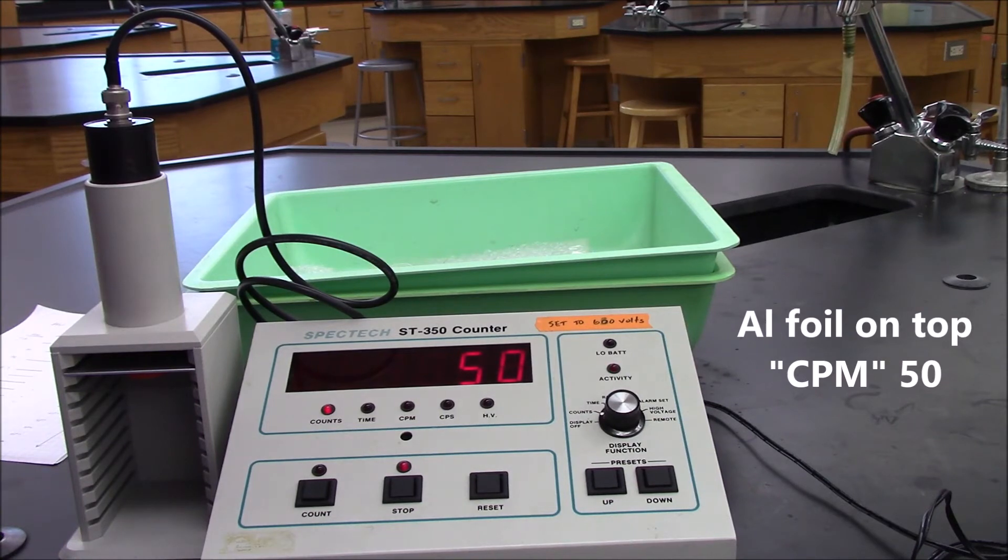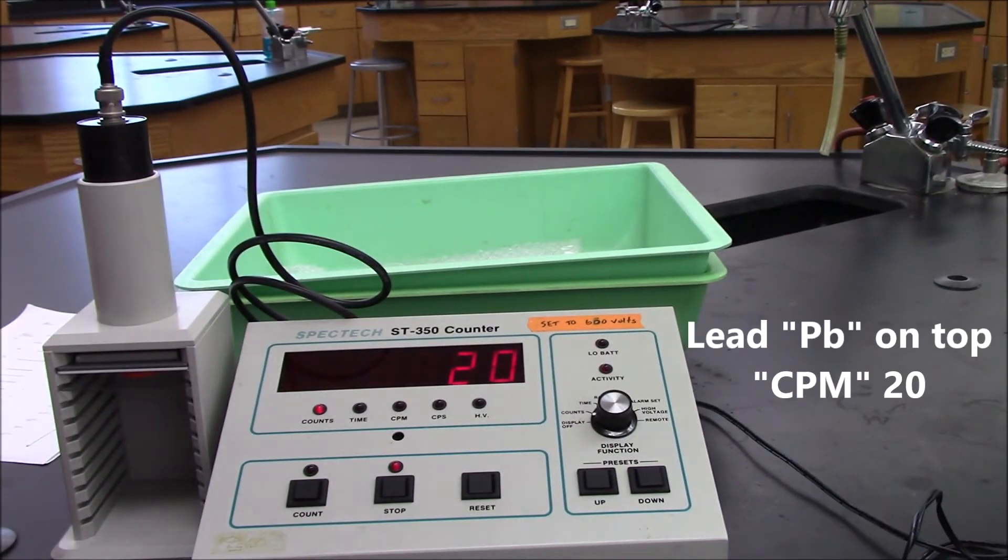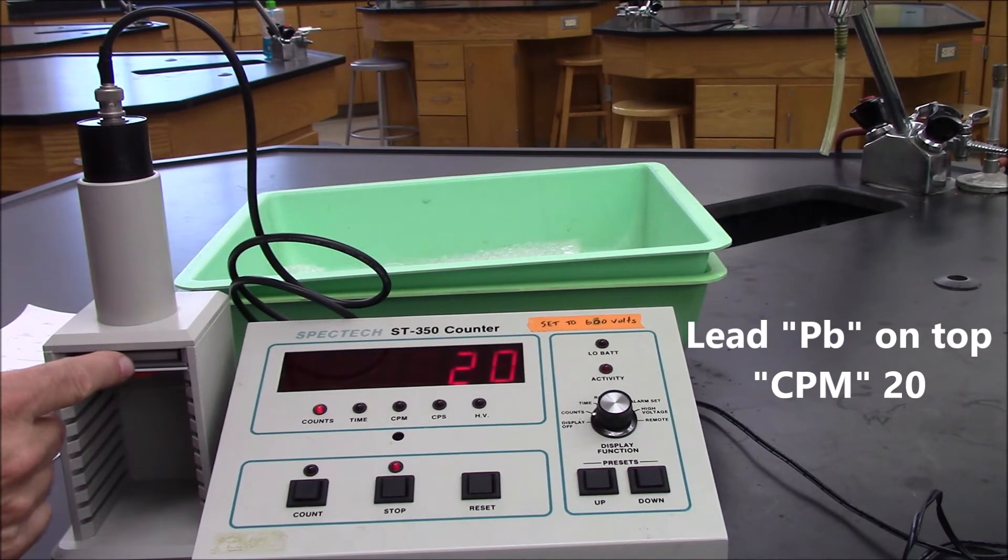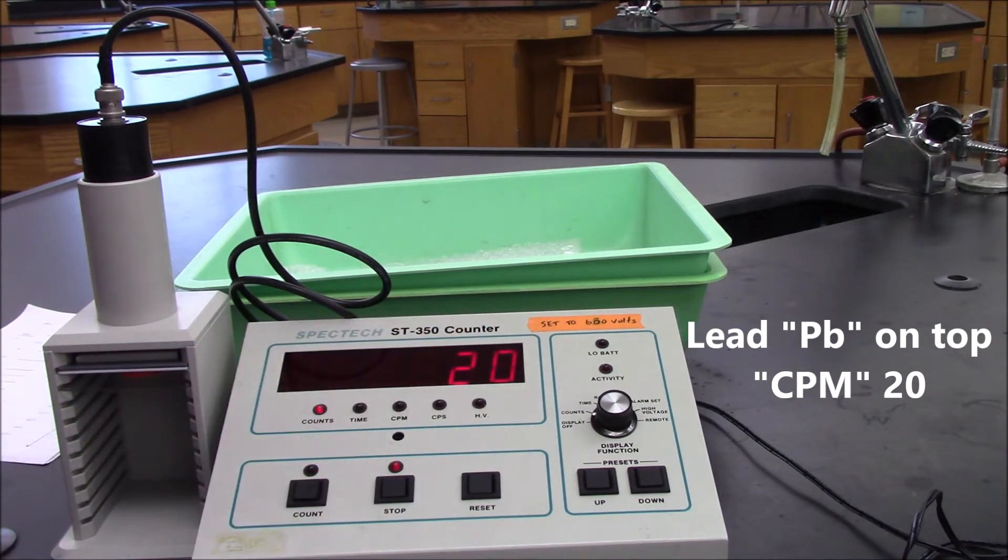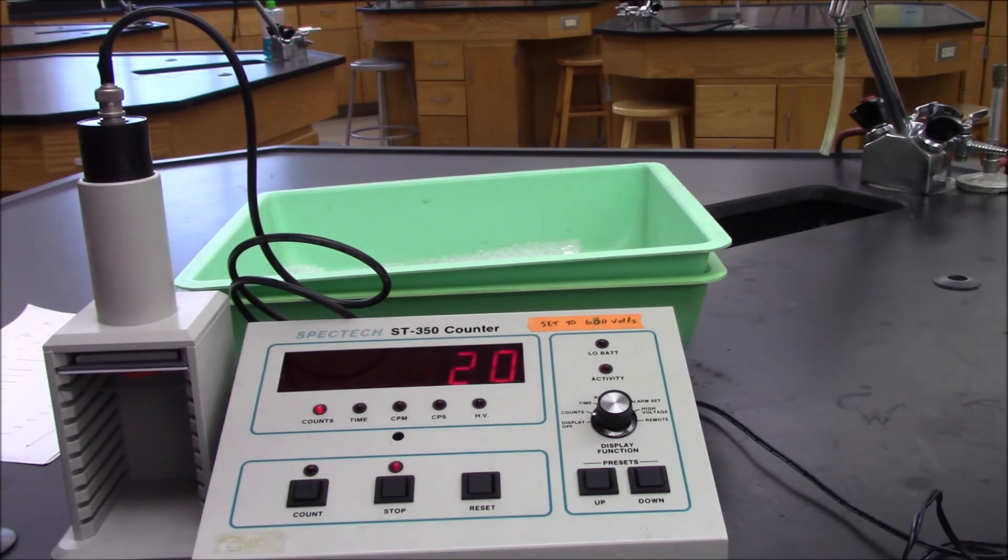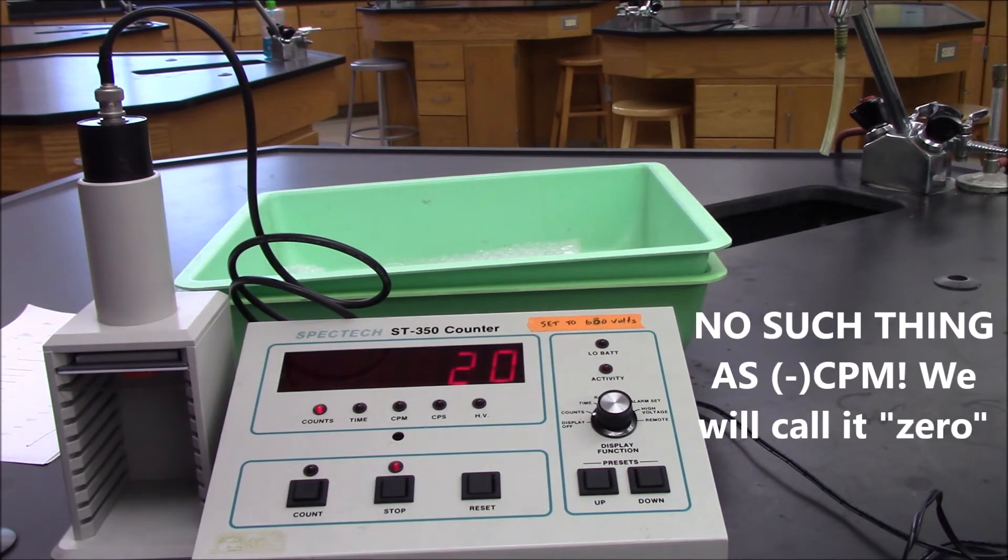Lastly, I'm going to put a piece of lead, a much denser metal, on shelf one, and we'll see what happens. So here I put a piece of lead in between, and you can see we're down to 20 counts, and if you think about what our background radiation is, we might be awfully close to zero. If by chance when you get your net counts per minute, you end up with a negative number, we'll just call that zero.